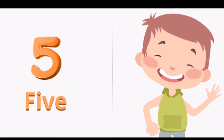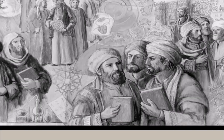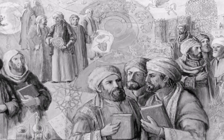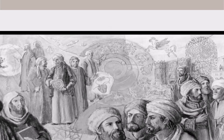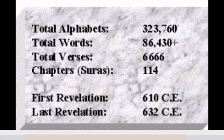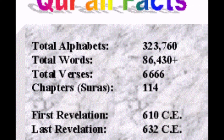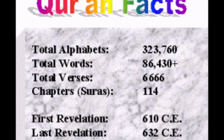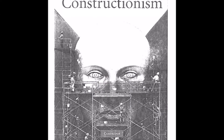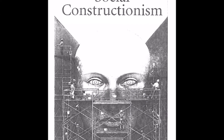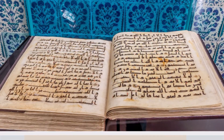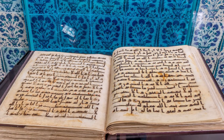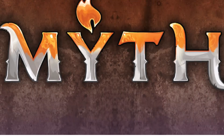Many Muslim scholars, theologians, and historians believe that there are 6,666 verses in the Quran. This is also a nice example of social constructionism. In fact, this common belief about the number of verses in the Quran among Muslims is a complete myth.